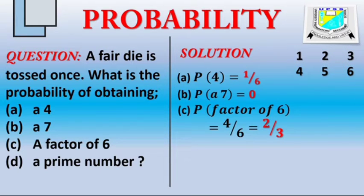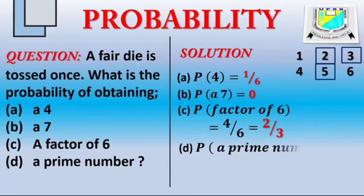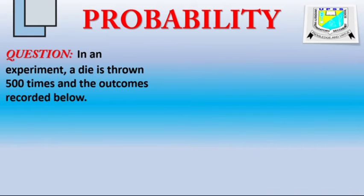Lastly, how do I get a prime number? The probability of getting a prime number. How many prime numbers do we have? 2, 3, 5. Three numbers out of 6. So the probability of getting a prime number should be 3 over 6, which is 1 over 2. Let's move up to the next question.